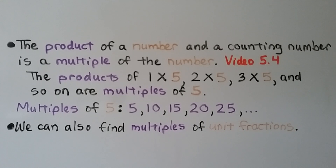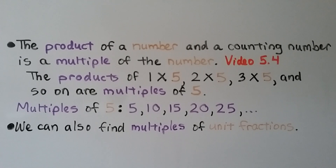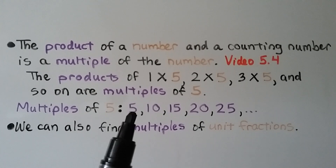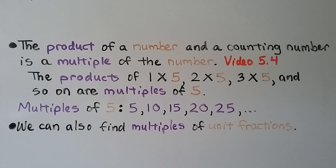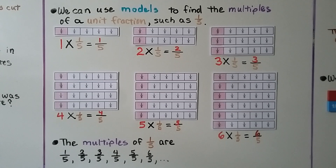The product of a number and a counting number is a multiple of the number. We learned about multiples in video 5.4. The products of 1 times 5, 2 times 5, 3 times 5, and so on are multiples of 5. The multiples of 5 — we skip count by 5's: 5, 10, 15, 20, 25, and so on. Well, we can also find the multiples of unit fractions. We can use models to find the multiples of a unit fraction such as 1/5.